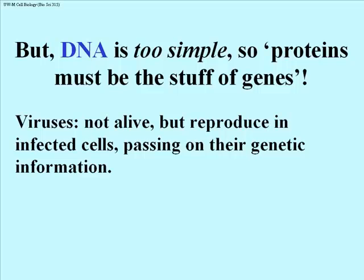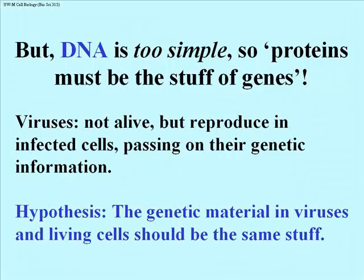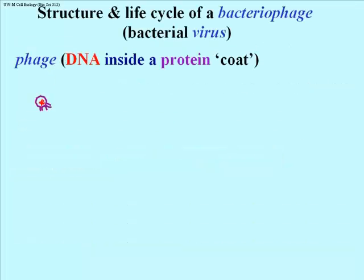Let's talk about viruses. We're headed towards the Martha Chase and Alfred Hershey experiment using phage, or bacterial viruses. Viruses, of course, are not alive — they only reproduce when they infect a cell, and they pass their genetic information on by replicating their DNA. So there was a hypothesis that since bacterial viruses contained proteins and DNA, one of those two would be the genetic material, and that whatever the genetic material of the virus was, that would be the genetic material of all cells.